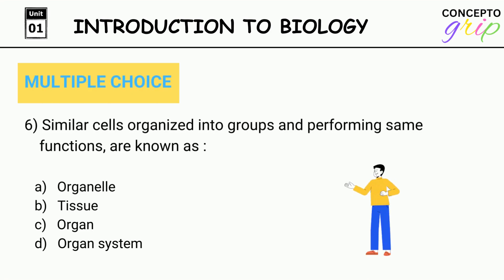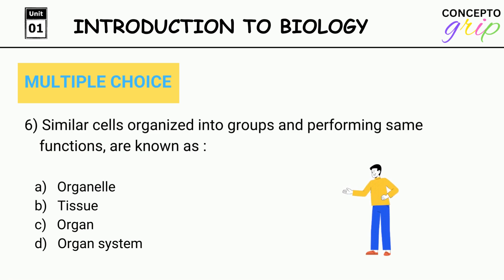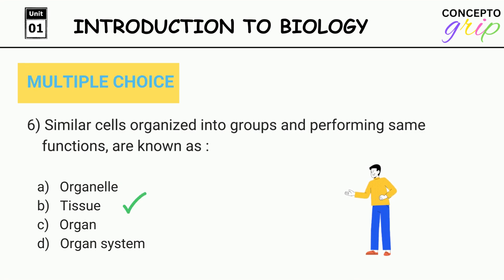Question 6. Similar cells organized into groups and performing same functions are known as: A. Organelle, B. Tissue, C. Organ, D. Organ system. Correct option is B. Tissue.